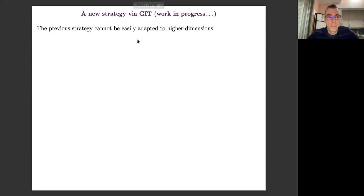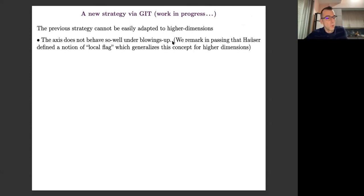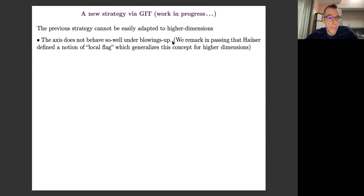So essentially, what's the problem with the previous strategy that I explained to you? I recall there are these two cases where we were able to prove the resolution of singularities for vector fields or foliations by curves. In both cases, we have used some particular structure in the ambient space. In dimension two, there is the divisor, which guided the choice of coordinates. And in dimension three, I had introduced this new structure called an axis, which allowed us to control and rigidify the local change of coordinates. The problem is that when you try to generalize this to higher dimensions, they don't behave so well by blowing up.